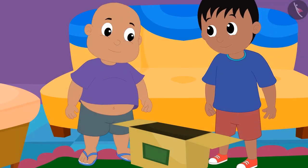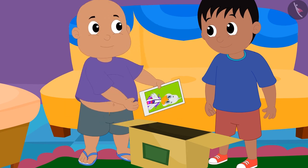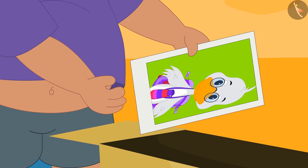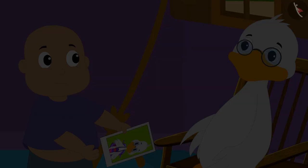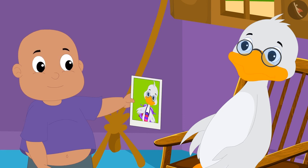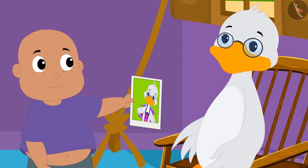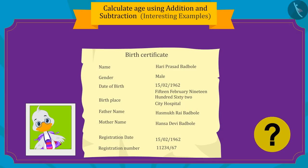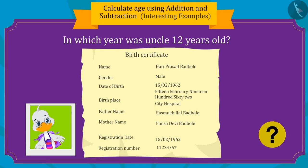Raju and Bablu also found some old pictures of uncle. Bablu took a picture of uncle and saw that in that picture uncle was in a school uniform. Bablu asked uncle how old he was at that time, and uncle told him he was 12 years old then. Children, can you tell in which year uncle was 12 years old?